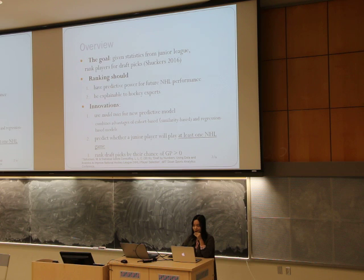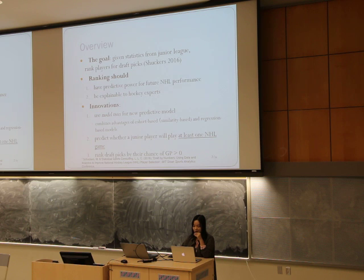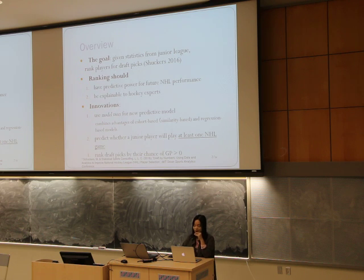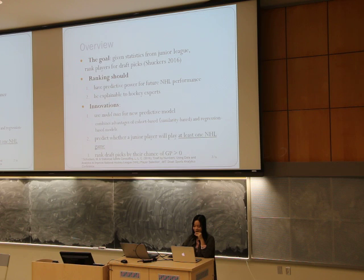As we all know, it's important for every team, especially the team manager, to draft prospects to build a successful team. Our goal is to rank players for the draft picks based on statistics from the junior leagues. The closest work to our study is from Dr. Schuckers in 2016. We build a generalized model using the pre-draft statistics, and our ranking should have good predictive power for future actual performance of a drafted player, and should also be easy to understand for hockey experts.